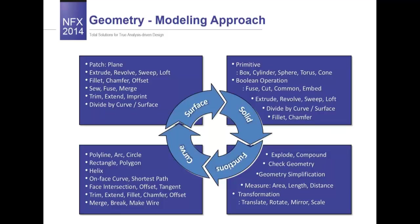These geometry tools are available in analyst mode. We can create all types of geometry starting from a point and ending on a solid. To create geometry we can use polylines, arcs, and circles, then transform these entities to 2D and 3D objects. We can extrude, revolve, sweep, and loft the geometry. To create solid geometry we can use primitive shapes like boxes, cylinders, and spheres. If we want to edit imported geometry, we use the explode function to get lower-level shapes. MidasNFX also provides measurement and transformation tools.